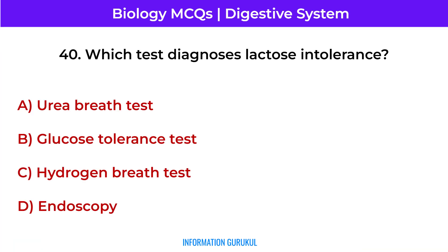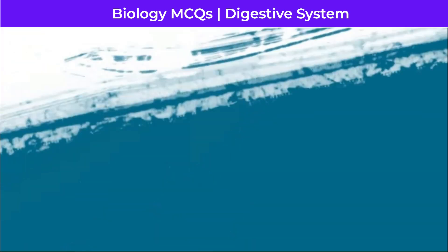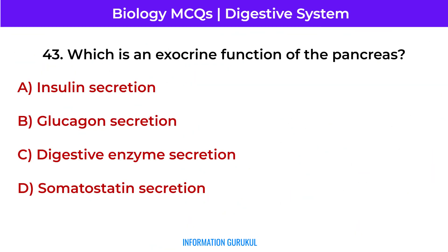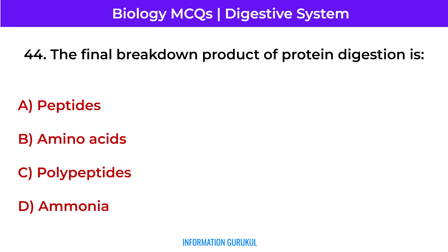Which test diagnoses lactose intolerance? The hydrogen breath test. Blood in stool may indicate hemorrhoids. A patient with greasy stools may have pancreatic insufficiency. Which is an exocrine function of the pancreas? Digestive enzyme secretion.